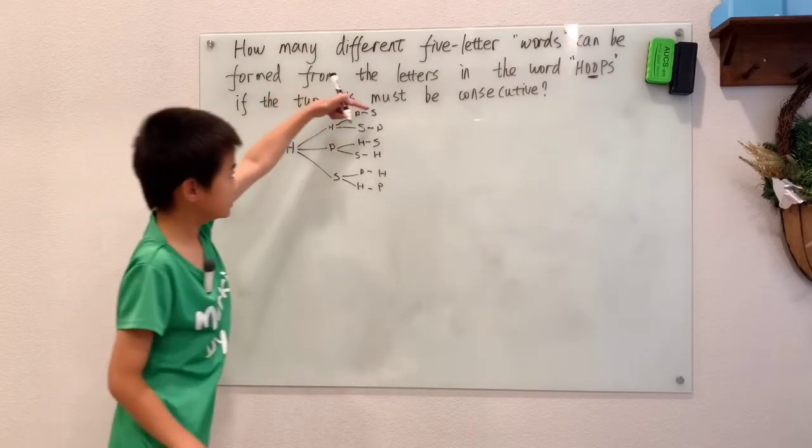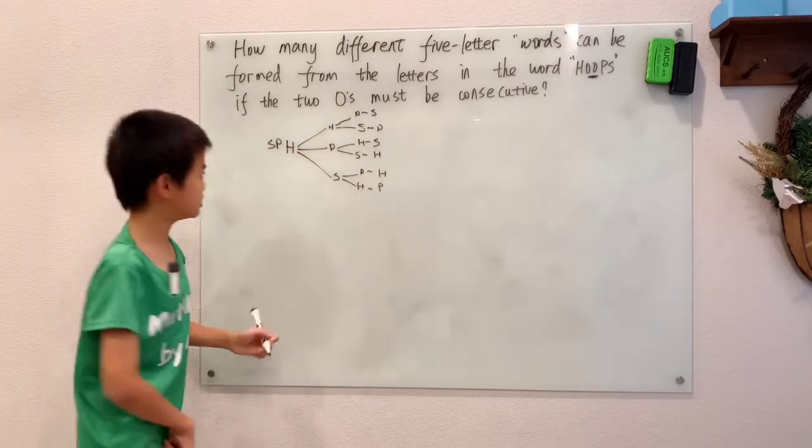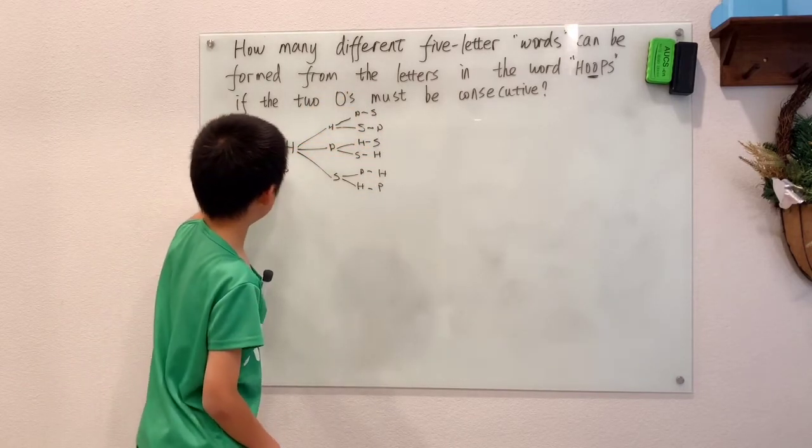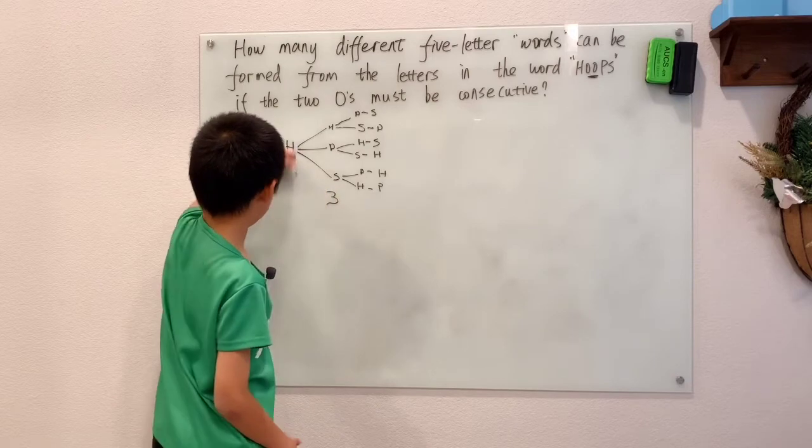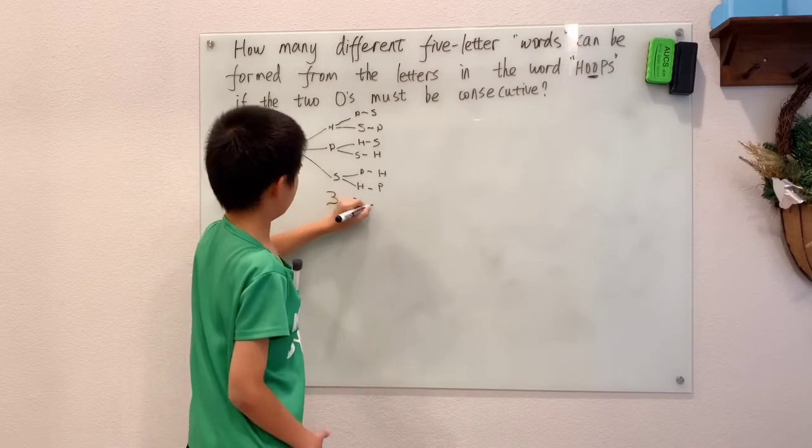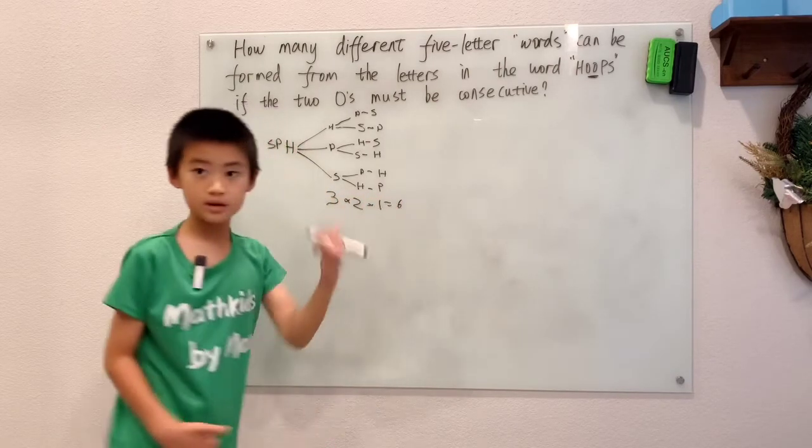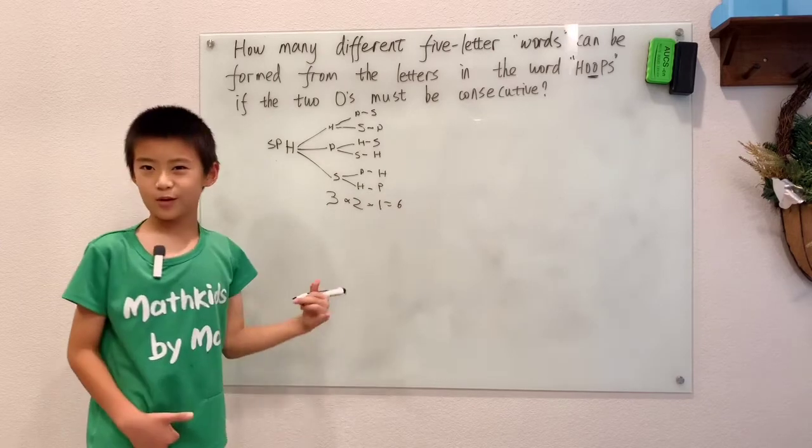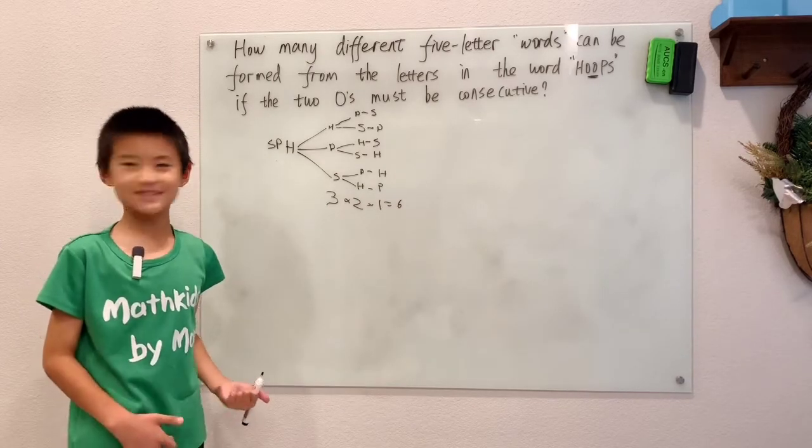We have six different possibilities. Three... I should draw the three here. Three times two equals six. I was about to calculate just to find one number, six. So anyways...